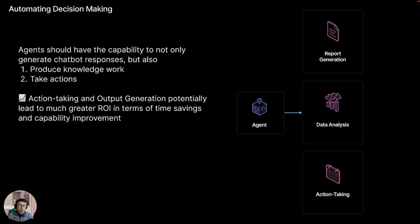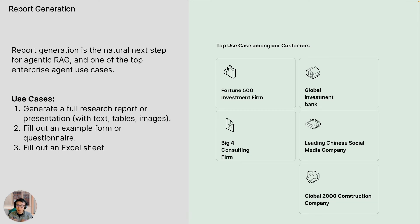Some of the top use cases that we see include report generation, data analysis, and action taking. For the purposes of this video, we'll talk about report generation as a very broad concept. Report generation is a very natural next step for any sort of agentic RAG application, and it turns out it's also one of the top enterprise agent use cases we see among our users and customers — from banking and finance to consulting, legal, tech, and manufacturing.